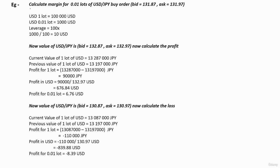Now let us take a look at another example. Calculate the margin for 0.01 lots of USD/JPY by order. In this example, USD is the base currency. The value of 1 lot of USD is equal to 100,000 USDs, so the value of 0.01 lot is equal to 1,000 USDs.